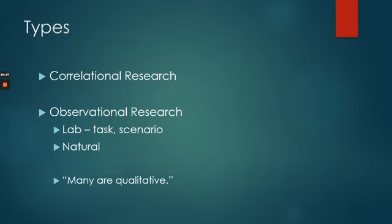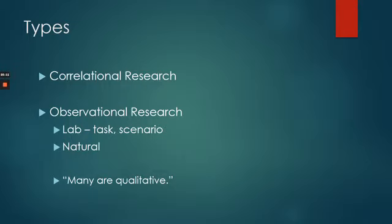The book also talks about observational research, which can be in the lab or a natural setting. In a lab, you'd have somebody do a task and have an expert watch and rate their personality, or create a scenario — like having couples fight and recording it. The nice thing in the lab is that you can usually record these things and systematically observe them, so the data are usually pretty rich.